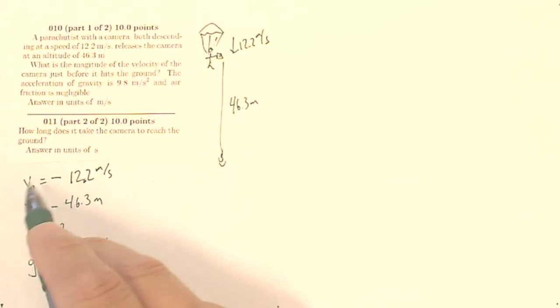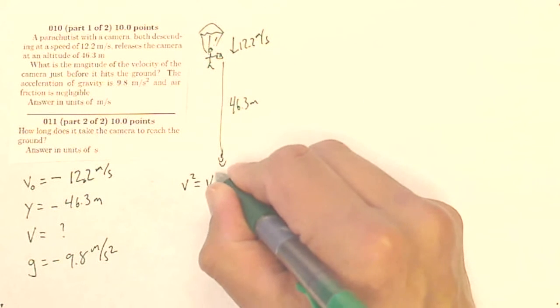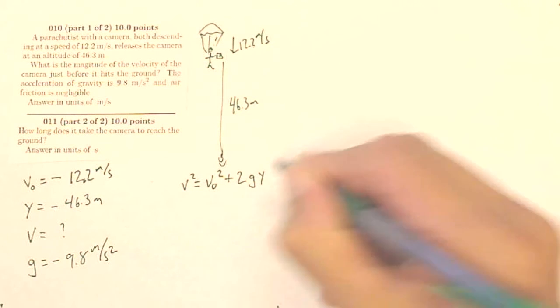Well, I do have an equation that relates my initial velocity, my final velocity, my acceleration, and my displacement. It tells me that v squared equals v0 squared plus twice my gravity times my displacement.